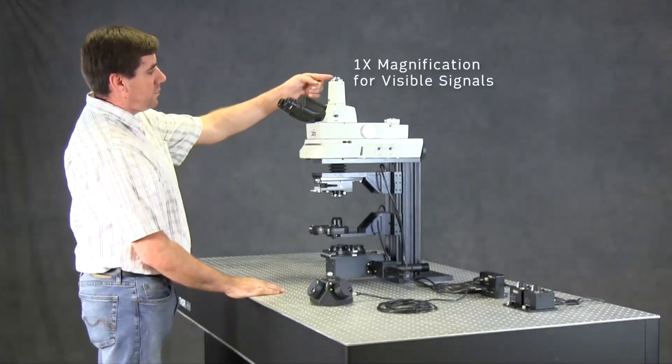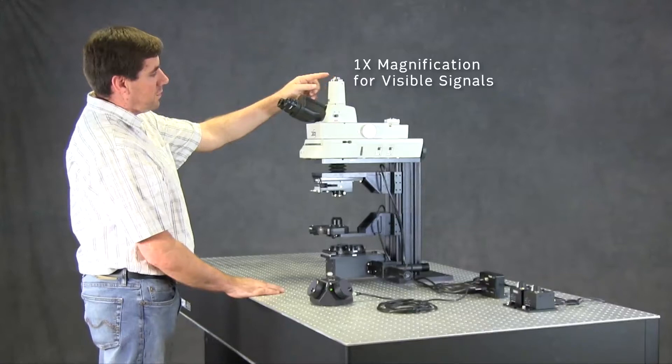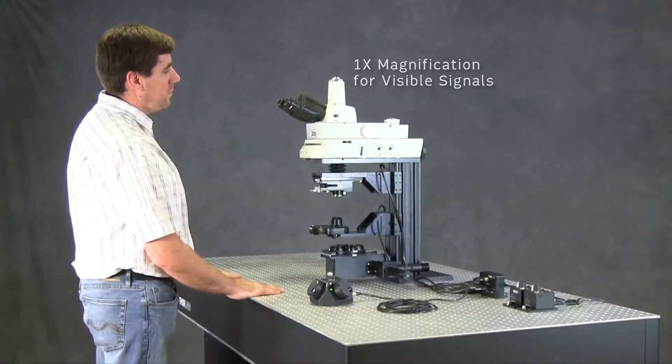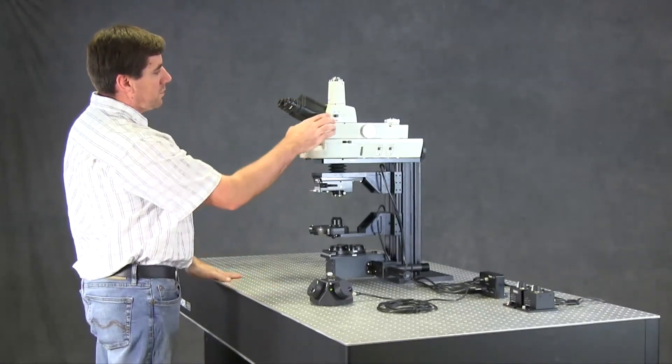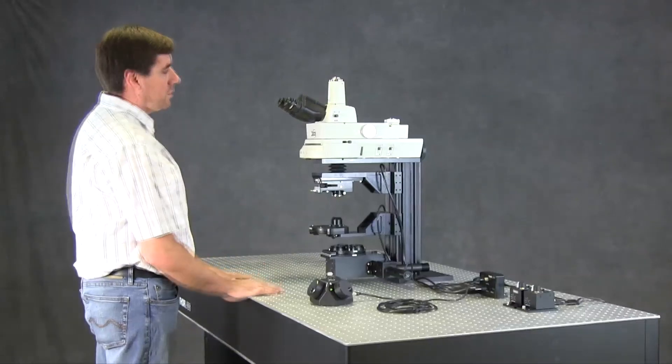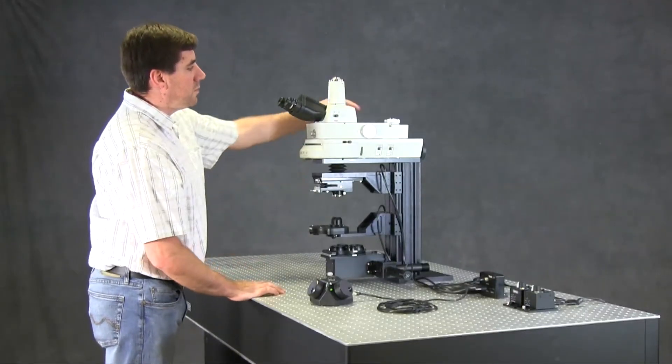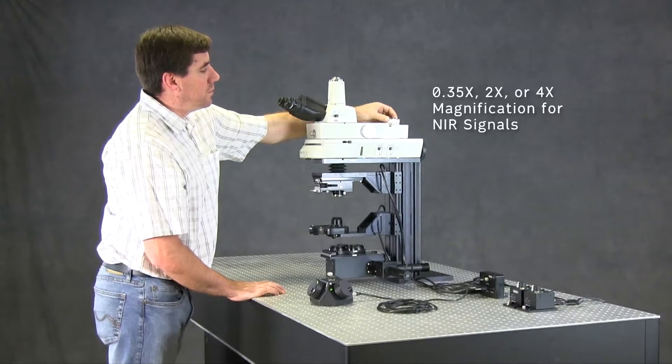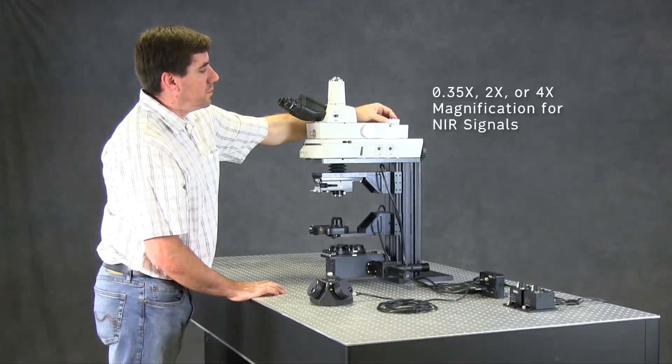The front camera port receives visible signals and has 1X magnification, and the knob on the side sends the image to either the trinoculars or the camera. The rear camera port receives NIR signals and has a rotating ring for fine focus adjustment.